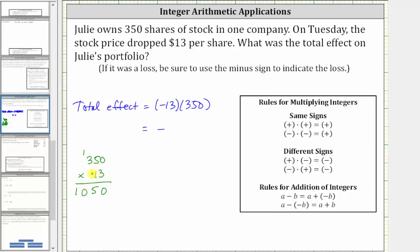And now we multiply by one. However, the one is in the tens place value, and therefore we place a zero in the ones place value before multiplying by the one.